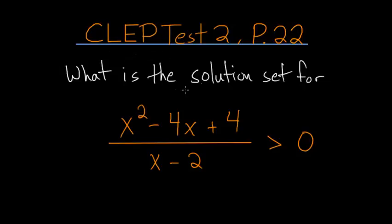What is the solution set for x squared minus 4x plus 4 divided by x minus 2 is greater than 0? And you can notice that this top quadratic here in the numerator, we can actually factor this.